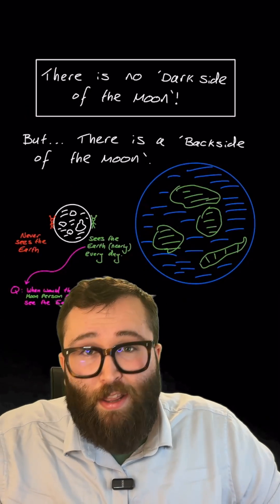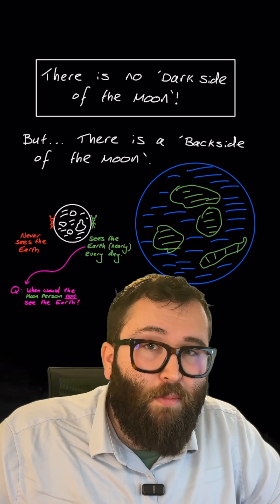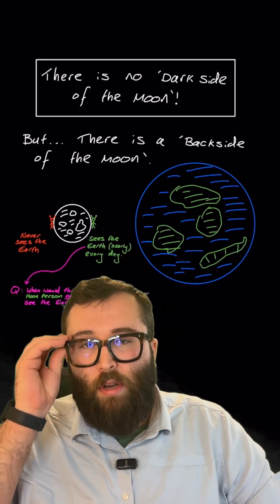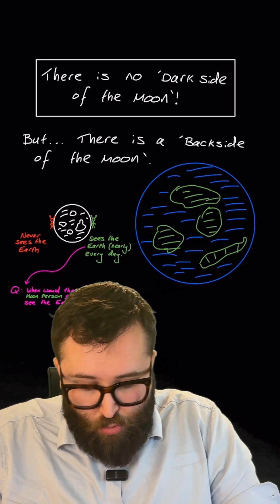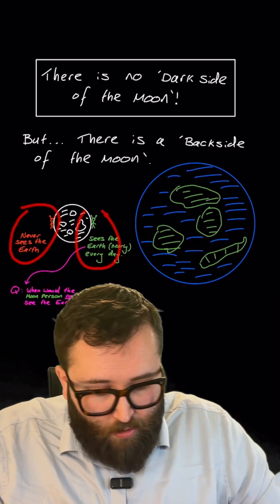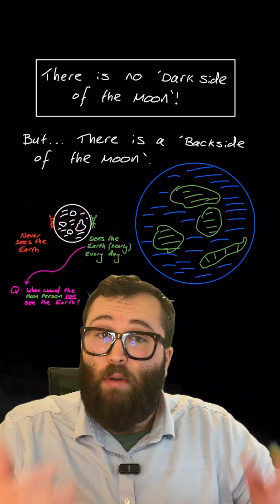So the conclusion here is actually that there is no perpetually dark side of the moon and perpetually light side of the moon—it changes just the way the night and day changes on the earth. These two moon people in red and in green over here will both experience night and both experience day.